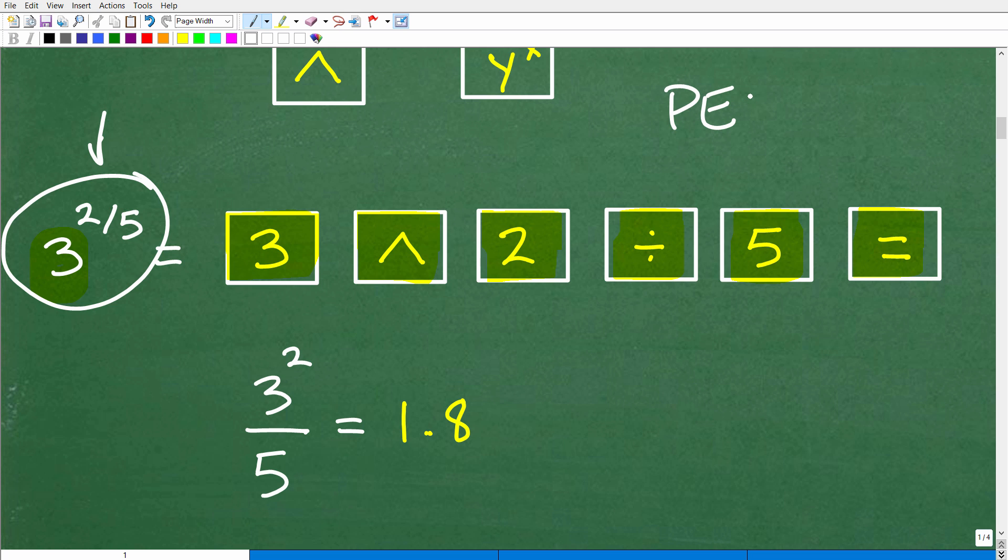Right here, let's think about the order of operations. Please Excuse My Dear Aunt Sally - PEMDAS. We don't have any parentheses. So what are we going to do next? E is powers. So here, this part means 3 to the 2nd power. This is 3 to the 2nd power. If I said find 3 to the 2nd power divided by 5, you would type it in this way - 3 to the 2nd power divided by 5.